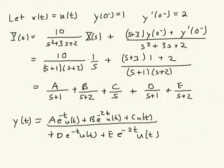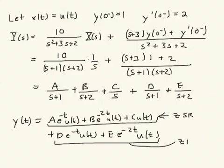This whole first piece would be the ZSR, and this whole second piece would be the ZIR. This gives us the expression for what y(t) equals, and all we need to know now are the constants — the partial fraction expansion coefficients A through E. So let's look at how to get those.